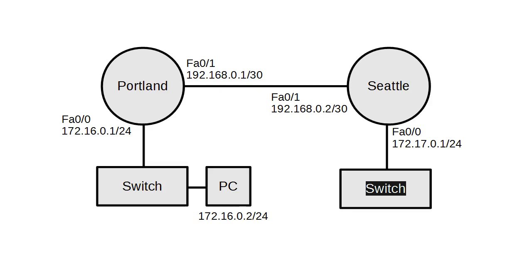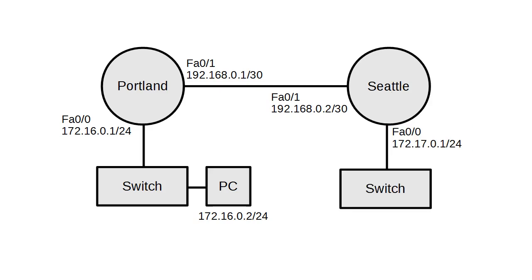It's a bit complicated. Normally, you make sure your PC has a default gateway to a router that knows about all the networks. With just two routers, all I had to do was add two routes — Portland didn't know about Seattle's route and vice versa. If a third router were added, you'd suddenly need to add a lot more routes. Static routing works fine for just two routers, but when you have more, it becomes very complex very quickly, which is why we use routing protocols to share routes.